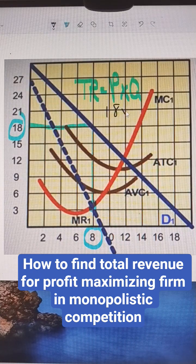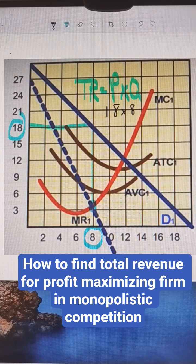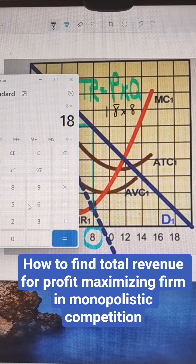We're going to multiply that by the quantity, which is 8. So 8 times 18 is 144. I already did that on the calculator here.